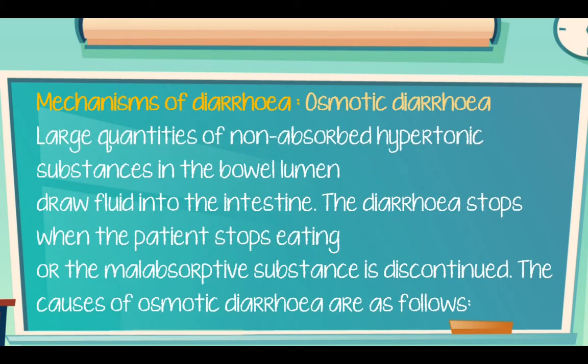Mechanisms of diarrhea. Osmotic diarrhea: large quantities of non-absorbed hypotonic substances in the bowel lumen draw fluid into the intestine. The diarrhea stops when the patient stops eating or the malabsorptive substance is discontinued. The causes of osmotic diarrhea are as follows.